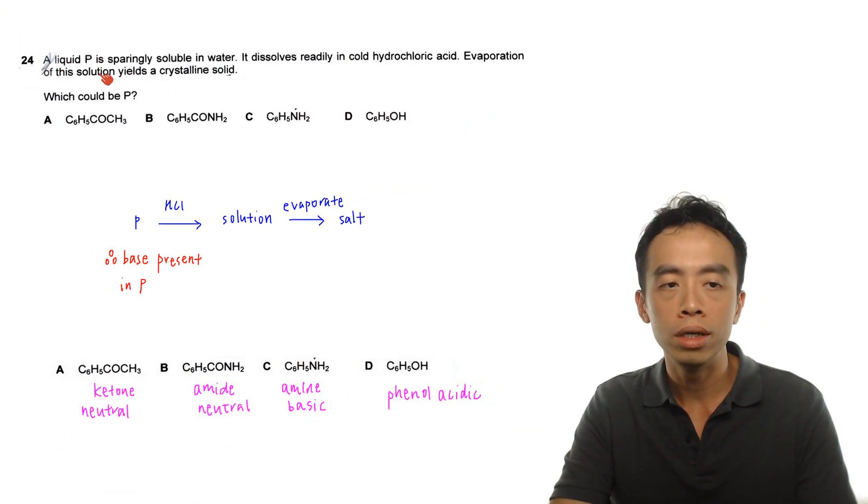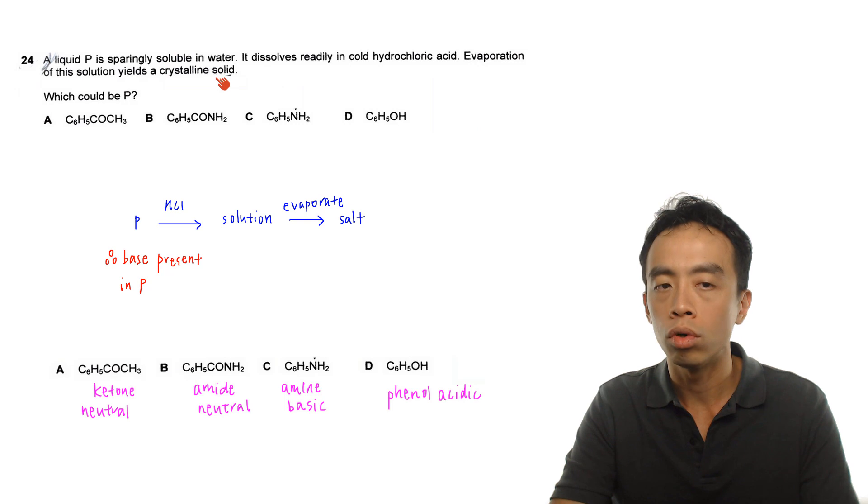Alright question 24, a liquid P is sparingly soluble in water, it dissolves readily in cold hydrochloric acid, evaporation of this solution yields a crystalline solid. So what could be P? We're given 4 options A, B, C, D.